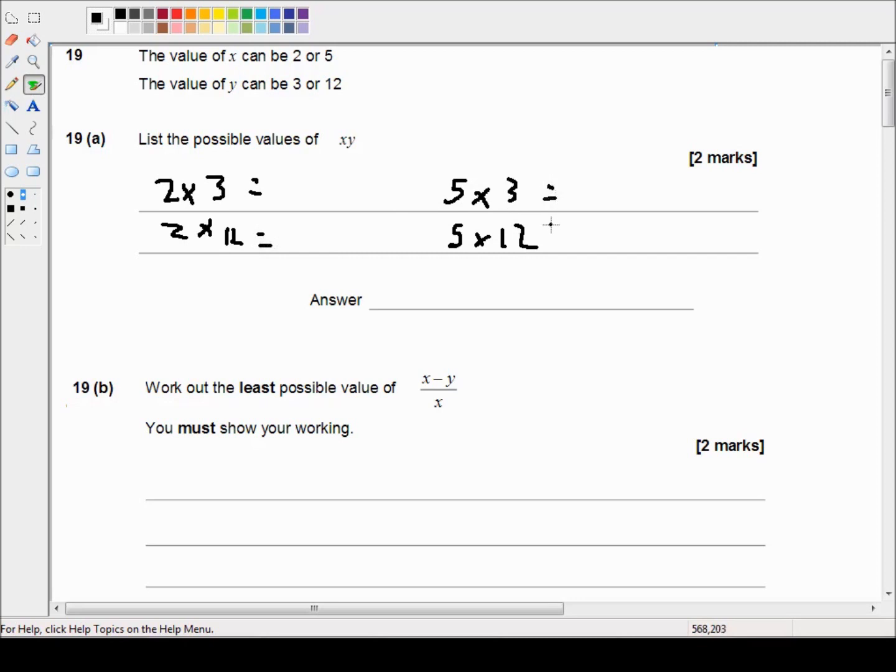Alright, so I don't think we even need a calculator for this. Two times three equals six. Two times twelve equals twenty four. Five times three equals fifteen. And five times twelve equals sixty. So our possible answers in order,